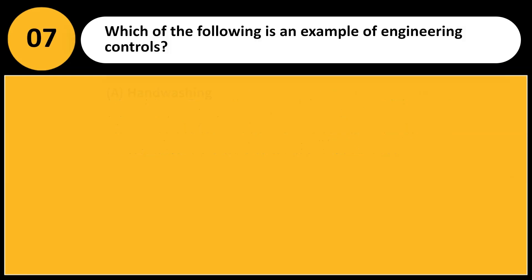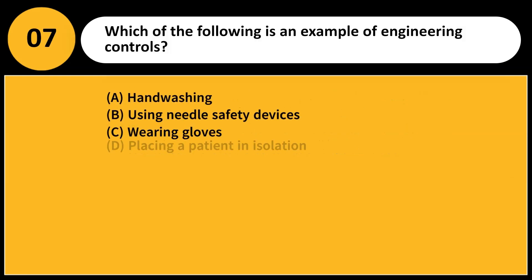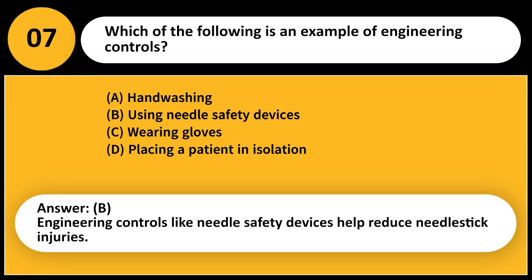Which of the following is an example of engineering controls? A. Handwashing. B. Using needle safety devices. C. Wearing gloves. D. Placing a patient in isolation. Answer: B. Engineering controls like needle safety devices help reduce needle stick injuries.